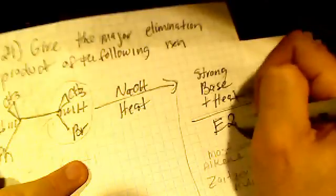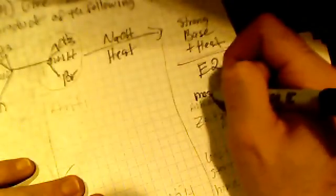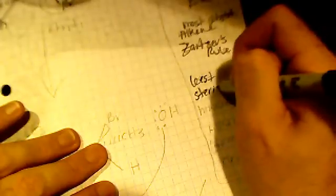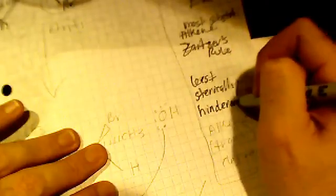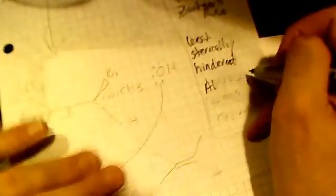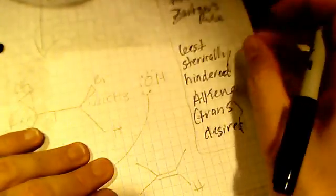So that's going to give us E2. We also want the most substituted alkene, and that's Zaitsev's rule. We want the least sterically hindered alkene, which would be trans. The least sterically hindered alkene is desired, and that is most likely to be trans.